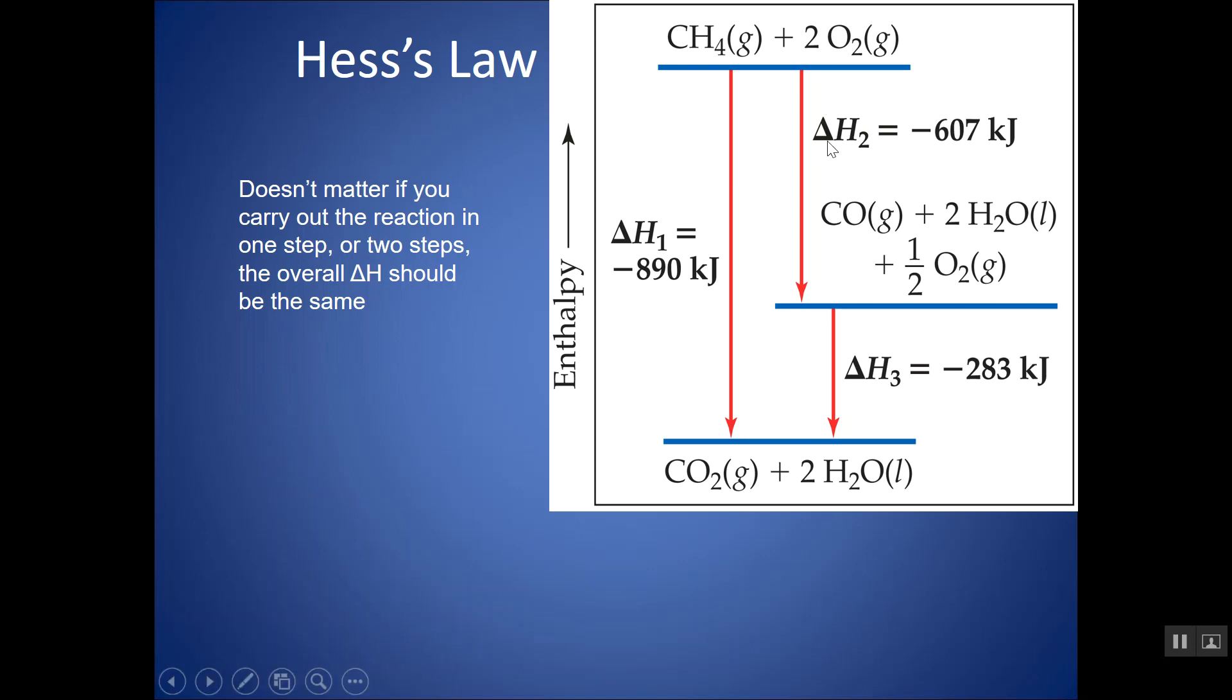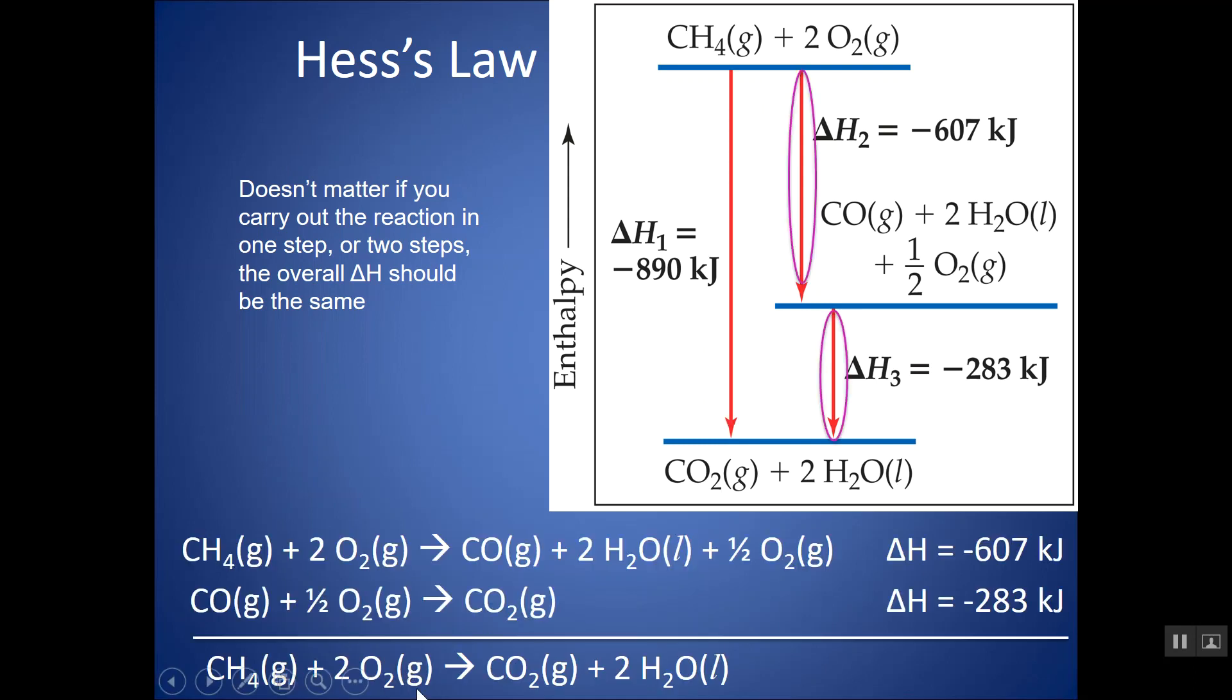And if I were to carry this out in two steps, notice that the sum of the two steps still adds up to negative 890. It doesn't matter if I do this in one step or two or even more. The delta H really only depends on the initial and the final. That's why they call it a state function. So, I can add them up to get the delta H of the overall.